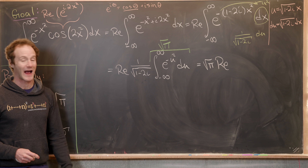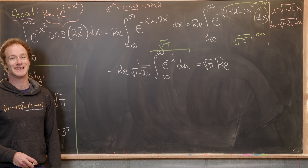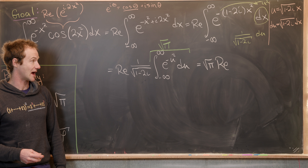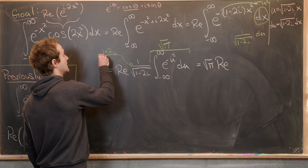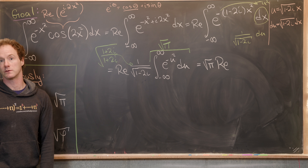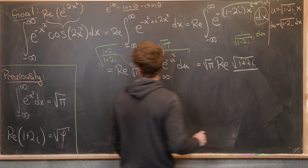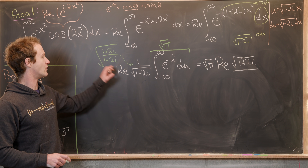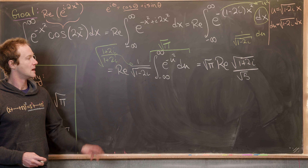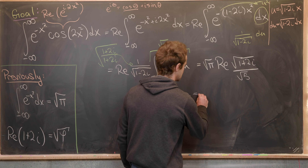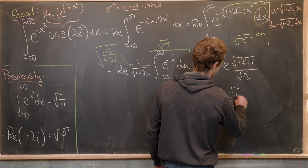Now I'm going to multiply by the complex conjugate of the expression inside the square root to simplify. The complex conjugate of 1 minus 2i is 1 plus 2i, so we multiply by the square root of 1 plus 2i over the square root of 1 squared plus 2 squared, which is the square root of 5. That gives us the square root of 1 plus 2i in the numerator and the square root of 5 in the denominator, and we can bring the square root of 5 out to get square root of pi over 5, times the real part of the square root of 1 plus 2i.